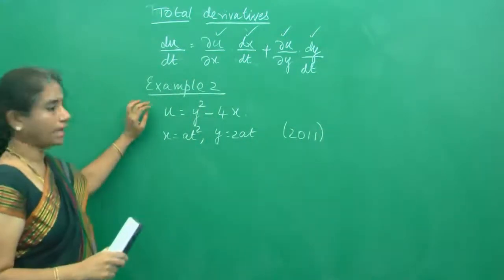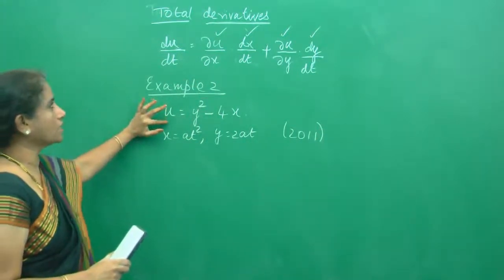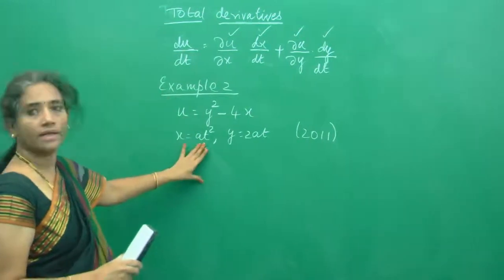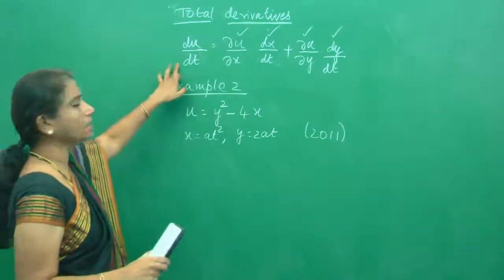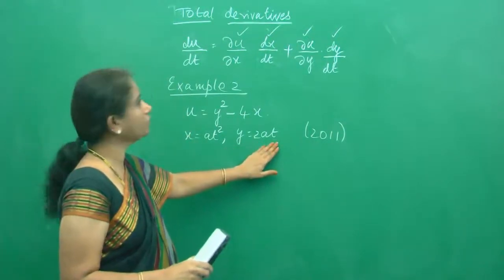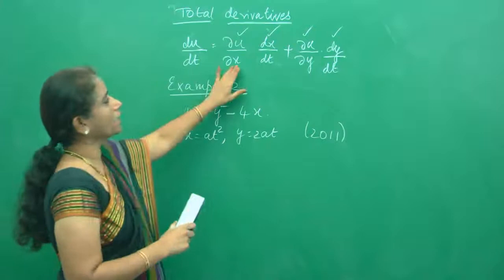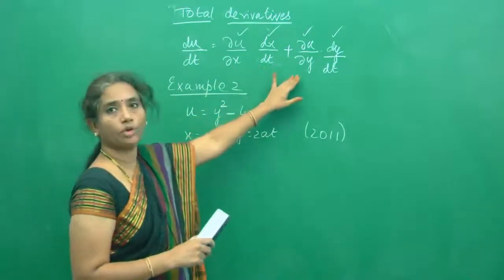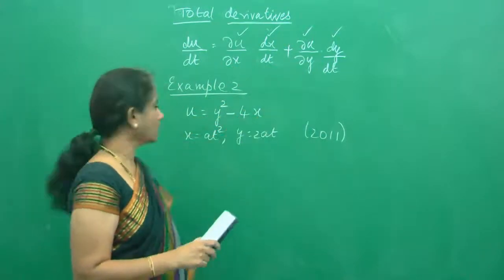So you can look here again, u is a function of x and y. You are going to find the derivative with respect to t, which is the total derivative, and x is a function of t and y is a function of t. Let me do ∂u/∂x, dx/dt, ∂u/∂y, and dy/dt.